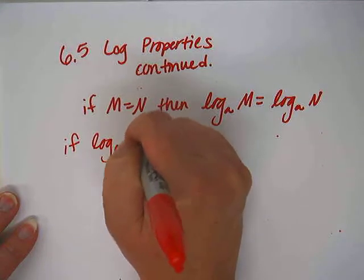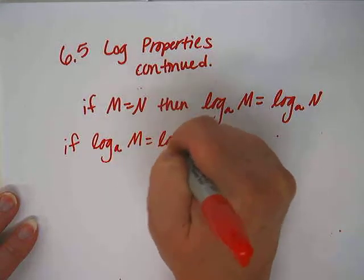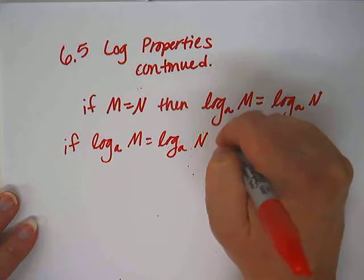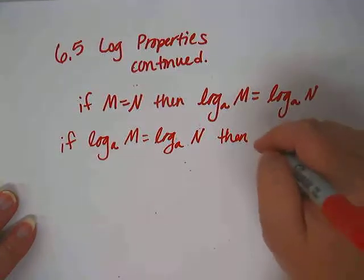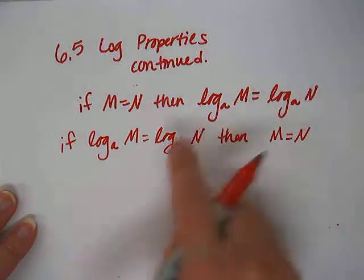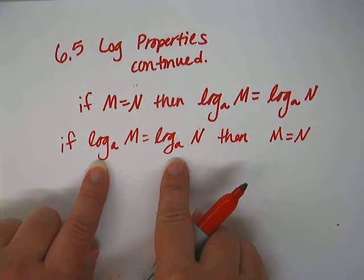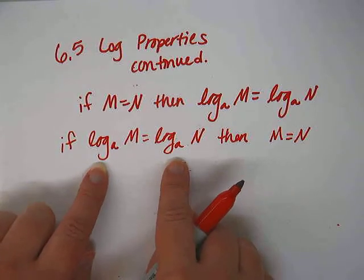Likewise, if you have the logarithms already there to begin with, then you can take them off, as long as they are exactly the same base. Just like you can square root both sides.